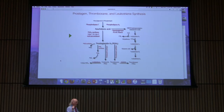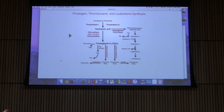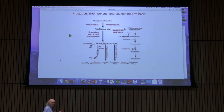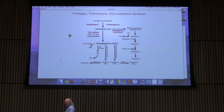Another way to stop prostaglandin production is by inhibiting phospholipase A2. Phospholipase A2 can be inhibited by steroids — cortisol or cortisone — which inhibit this enzyme and thereby inhibit production of all the prostaglandin precursors. This is actually more effective at reducing prostaglandin production because you don't even have the substrate. The downside is that steroids have many other negative effects, so we don't routinely give steroids as an inhibitor of phospholipase A2.